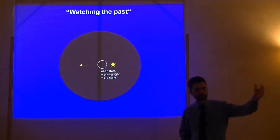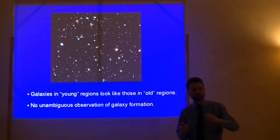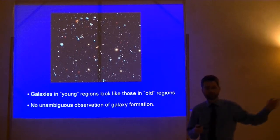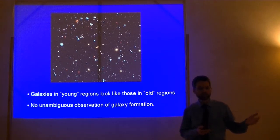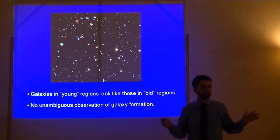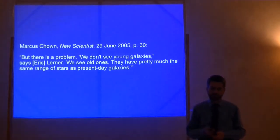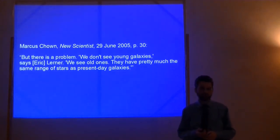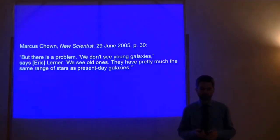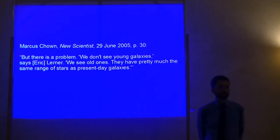But what do we see? With our most modern telescopes. We have reached more and more distant areas of the universe. And we found that the galaxies in the far away regions. In the younger regions. Look actually like those in the old regions. In the nearby regions. There is no cosmic evolution. This is against the prediction of the Big Bang theory. As Marcus Chown in New Scientist wrote in 2005. But there is a problem. We don't see young galaxies in the distant regions. Says Lerner. We see old ones. They have pretty much the same range of stars as present day galaxies.